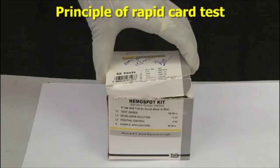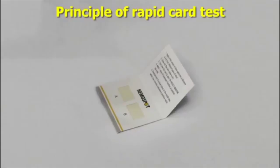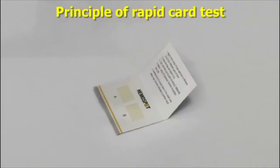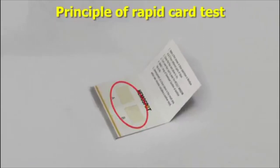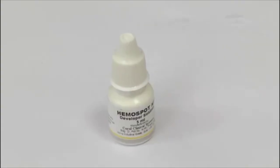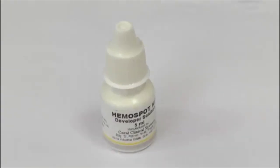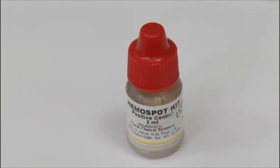Hemospot card test is a rapid card test available in the market for detection of fecal occult blood. Test cards consist of a filter paper impregnated with GOAC resin on the reactive surface, a developer solution containing hydrogen peroxide, and a positive control.